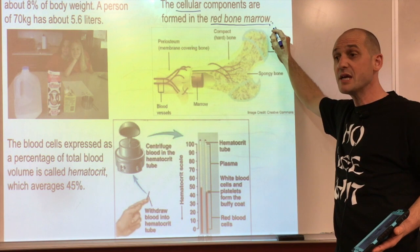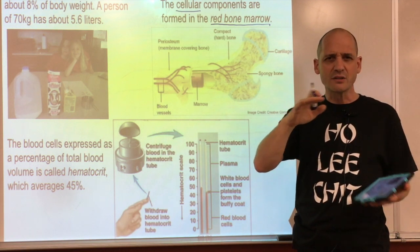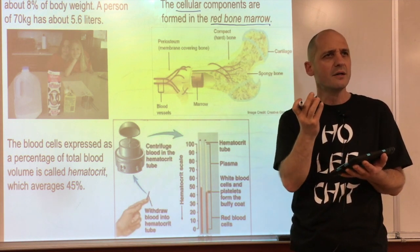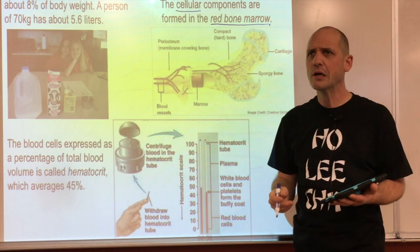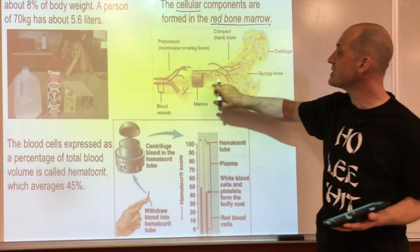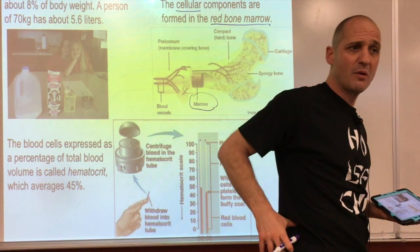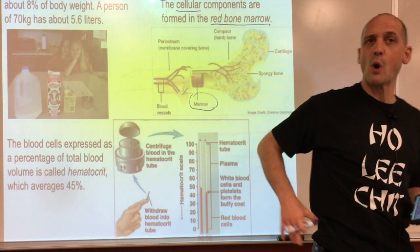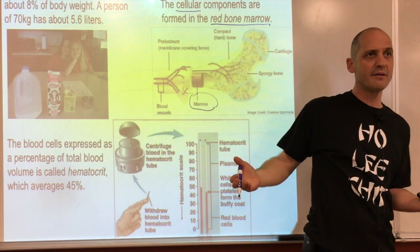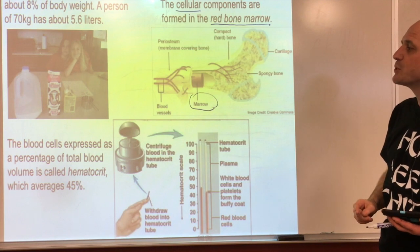Red blood cells, white blood cells, and platelets are all made in red bone marrow - that's inside the bone. The inside has spicules like scaffolding with lots of space, and inside that space we have the red bone marrow - not in all bones, but in many, like the hip bone. If someone has leukemia, a biopsy is taken from the red bone marrow to see what's going on with white blood cell formation.